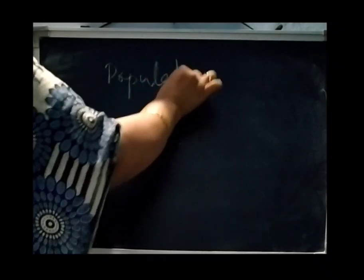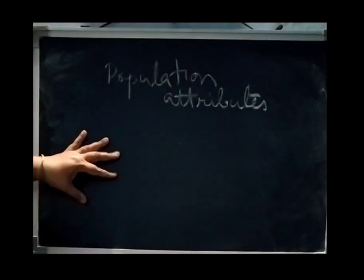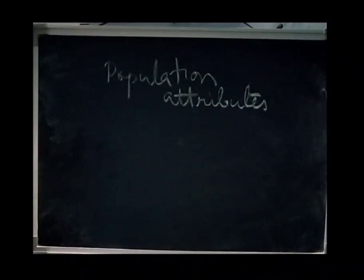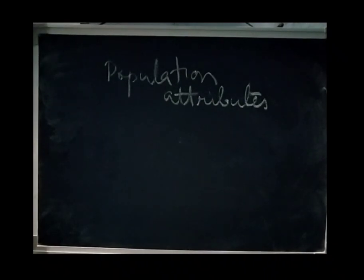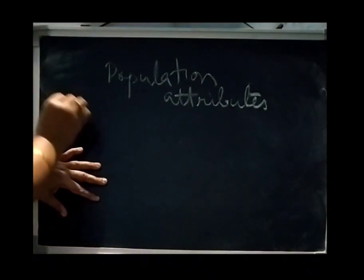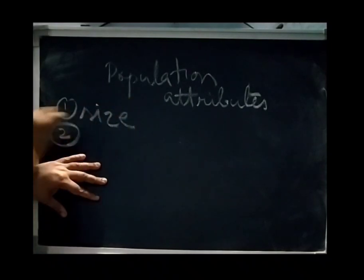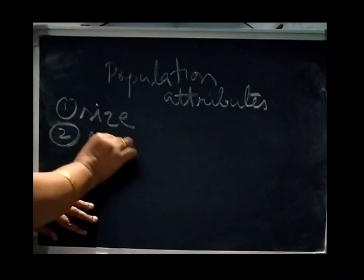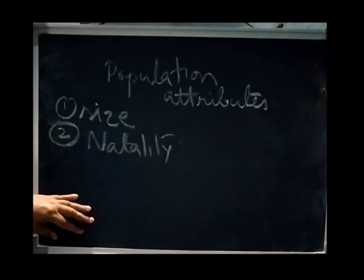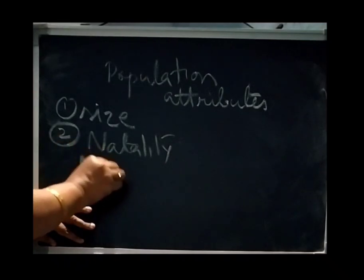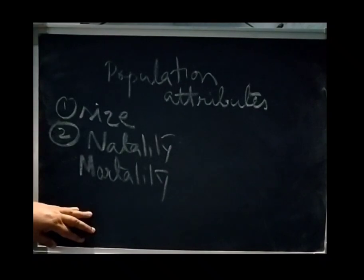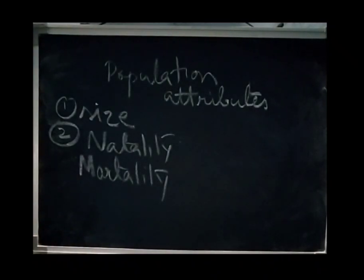Let us continue the topic 'Organism and Population.' Today we will discuss population attributes. In population attributes, we will discuss attributes that the population has but individual organisms do not. Some of these are: population size or density, birth rate, mortality, and sex ratio.